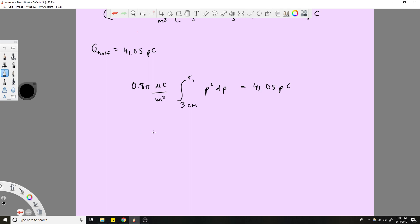So you would solve this. 0.8π microcoulombs per meter cubed, this would be times one over 3. It's 1 over 3, this would be r1 cubed minus 3 centimeters cubed. That would be equal to 41.05 picocoulombs. Next what you do is you'd divide all this over. R1 cubed minus 3 centimeter cubed equals 41.05 picocoulombs over all that, 0.8π microcoulombs per meter cubed.